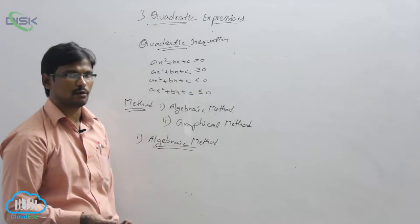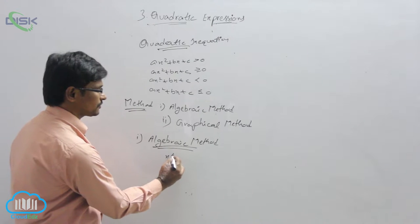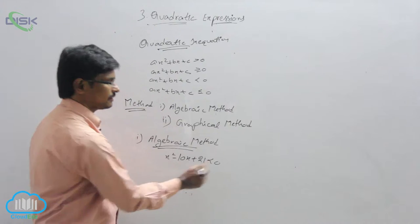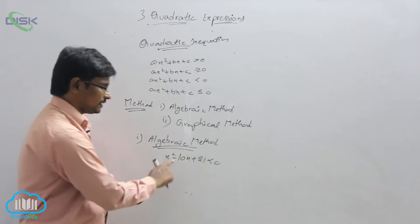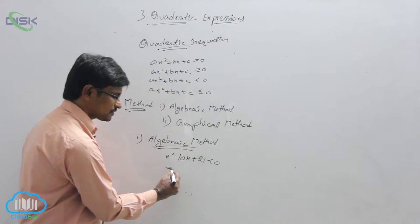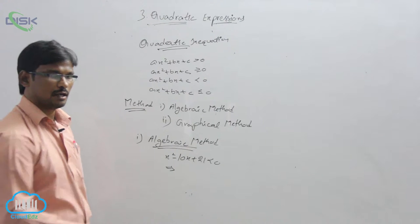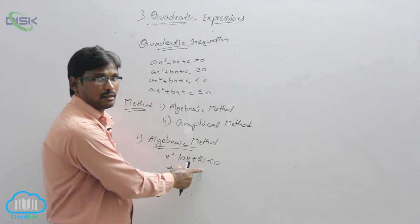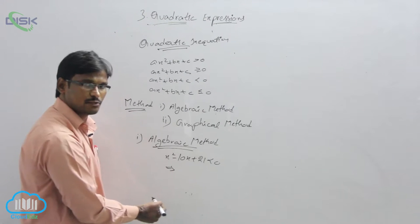First we will consider one quadratic inequation. That is the example: x² minus 10x plus 21 less than 0. Clearly this is a quadratic inequation, and for this two roots will be there. In the algebraic method, what we need to do is find out the factors of this expression.